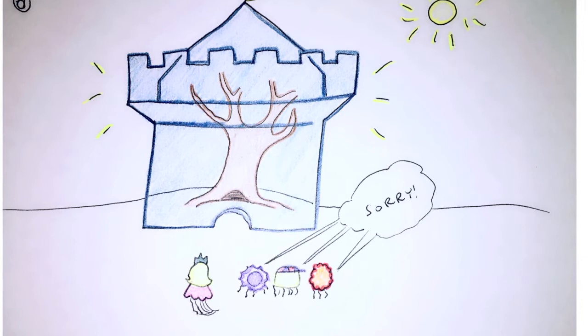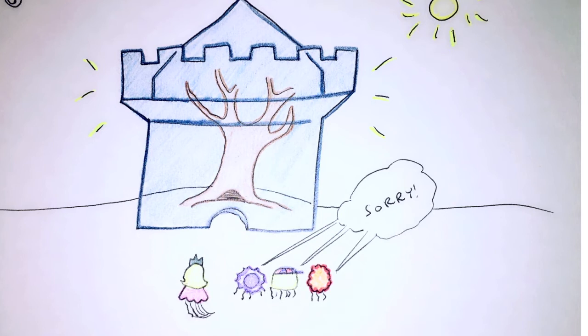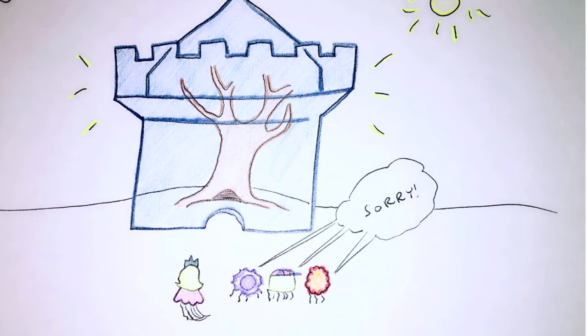Her friends apologized to Elsa, telling her they had no idea how special her proteins really were. Then they begged to come party in her ice castle with her and enjoy all the food inside.